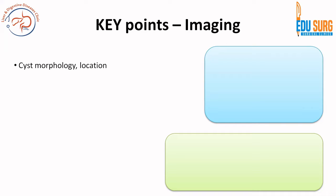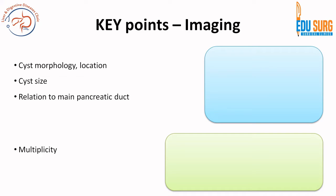The most important points are what we are highlighting here, and based on imaging there are some features that suggest the lesion is mucinous and may have a high probability of cancer. Whenever we see a scan for a pancreatic cystic lesion, the first and foremost thing is to know the morphology of the cyst - we have an entire video on cyst morphology. So you need the size, the location, and its relation to the main pancreatic duct, as some cysts communicate with the main pancreatic duct and this has implications on management.